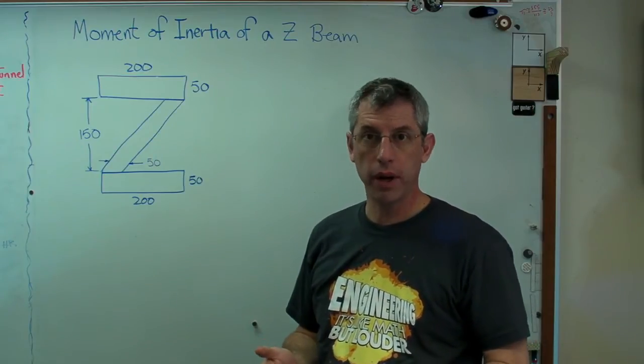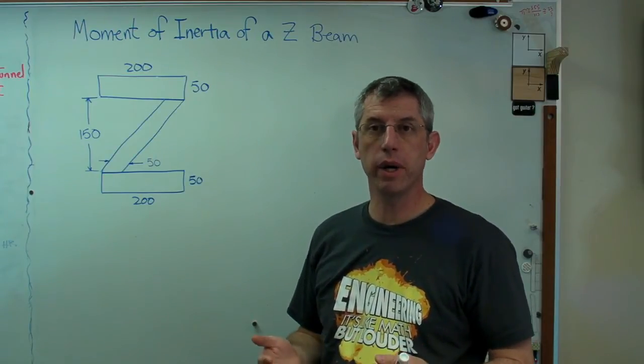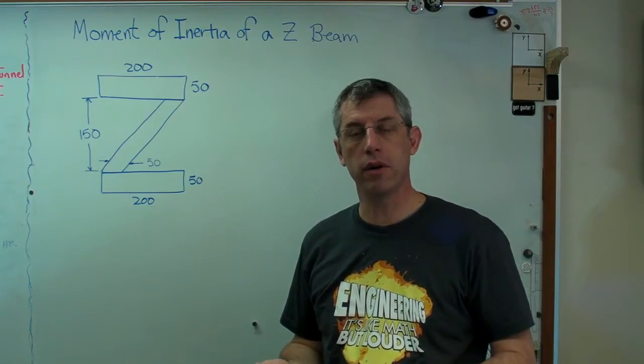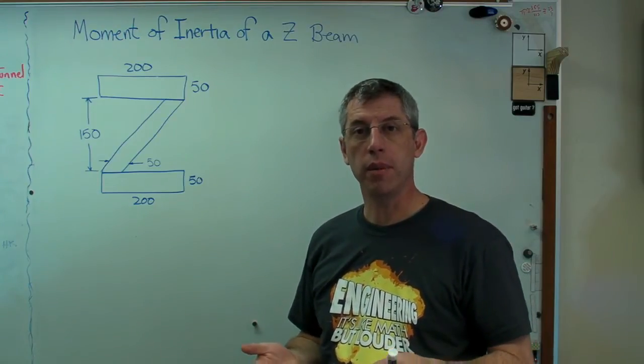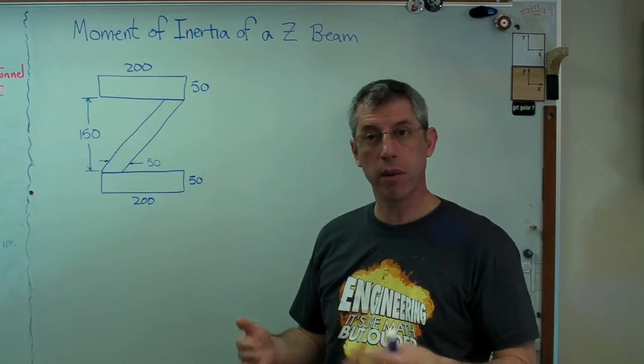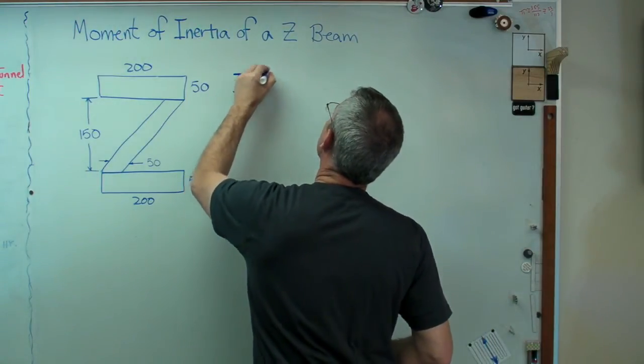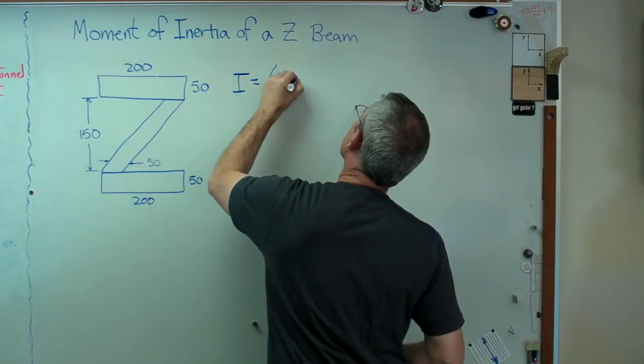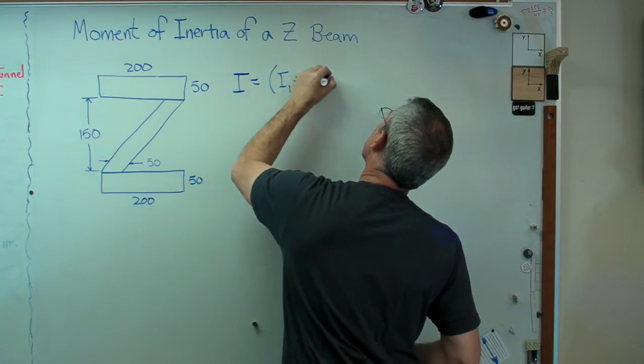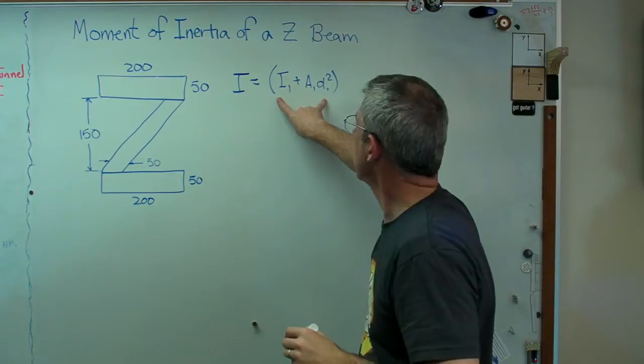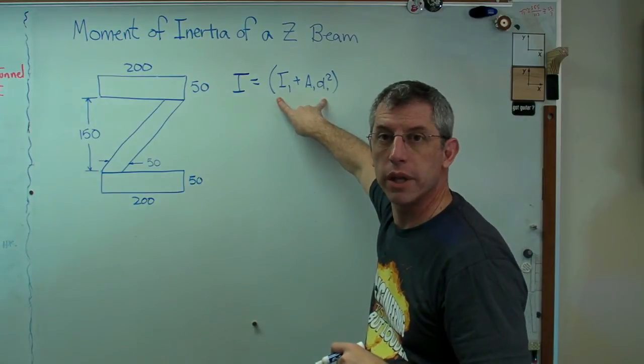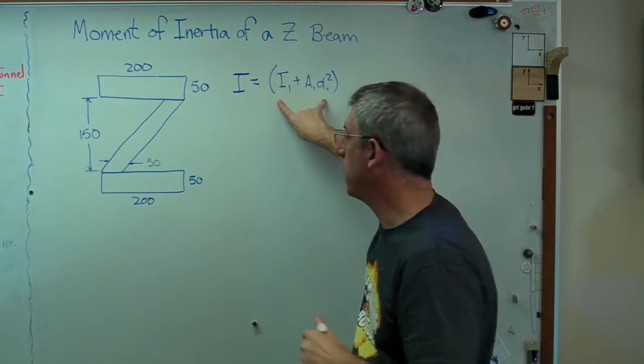So if we use the parallel axis theorem, there's a simple equation that describes the area moment of inertia of a beam or a cross-section that's made out of smaller pieces. And that looks like this. The total area moment of inertia is the sum of a bunch of terms where every term looks like that. There's one of these for every box.